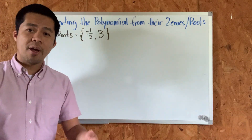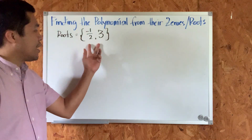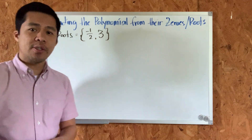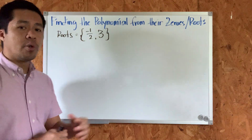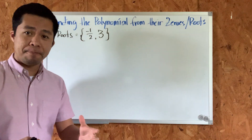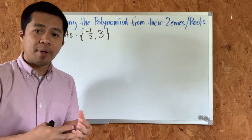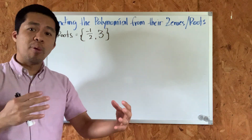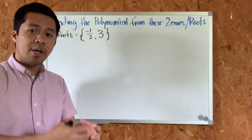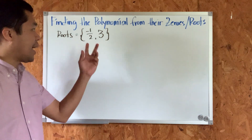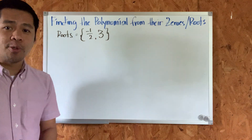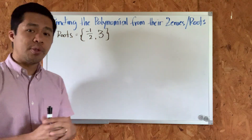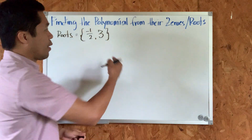the question is: what is the polynomial that has these two roots? We need to do two things. First, we will convert each root into a binomial. Second, once we have those binomials, we will multiply them in order to find the polynomial that has these two roots. So let us do those two things.